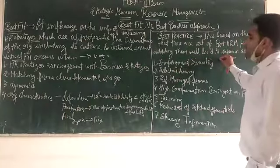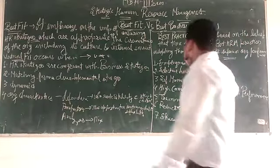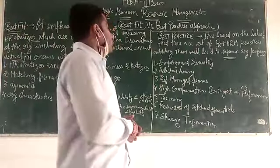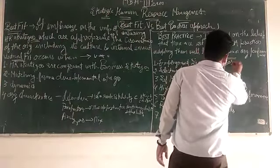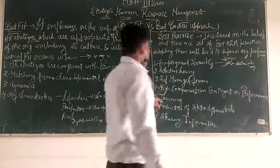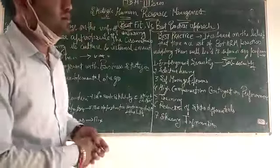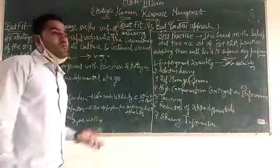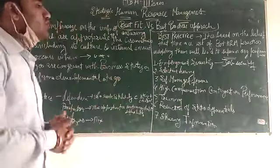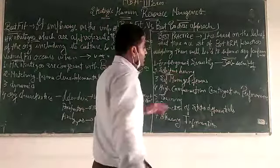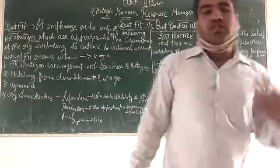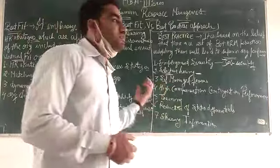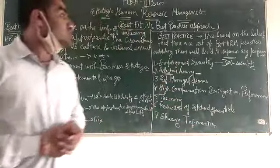Jeffrey Pfeffer has identified seven practices. First is employment security — ensuring employees in your organization have job security. Second is selective hiring, meaning thoughtful recruitment and selection, keeping in mind what kind of people you require and what skills should be selected. Third is self-managed teams — teams that are self-managed and disciplined with less supervision.